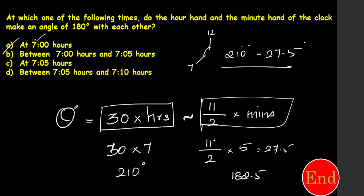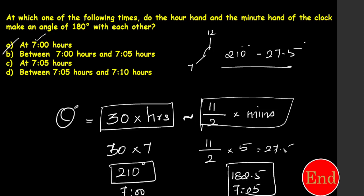Listen carefully. At 7 o'clock it was 210 degrees. At 7:05 it is 182.5 degrees. So from 7 o'clock to 7:05, the angle goes from 210 down to 182.5. But I need 180 degrees, and 182.5 is still not 180. So 7:05 is also not the right answer.